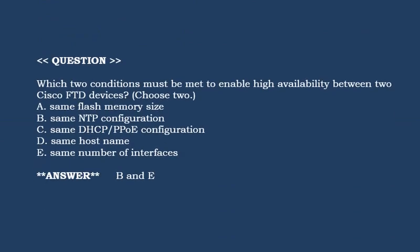Next question: Which two conditions must be met to enable high availability between two Cisco FTD devices? Choose two options. Option A: Same flash memory size. Option B: Same NTP configuration. Option C: Same DHCP PPPoE configuration. Option D: Same host name. Option E: Same number of interfaces.